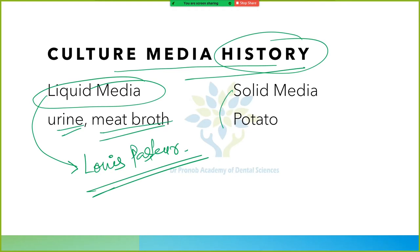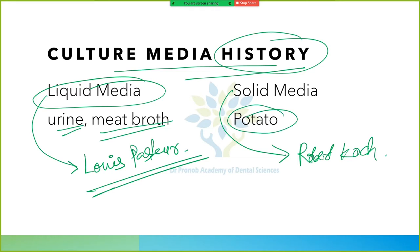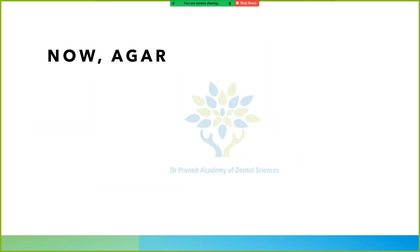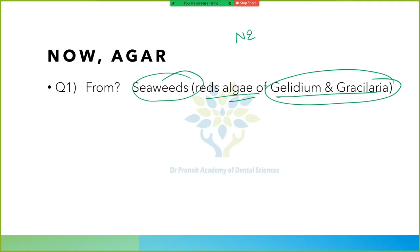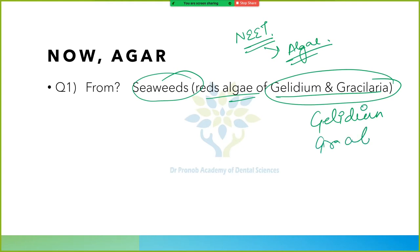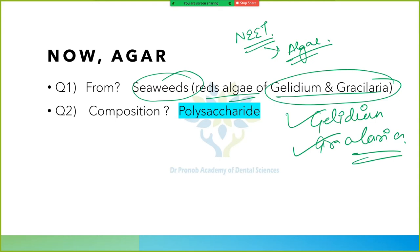Now we use agar. Agar is obtained from seaweeds — specifically red algae of Gelidium and Gracilaria. These names may be familiar from 11th and 12th grade biology. The composition of agar is polysaccharide, which is a carbohydrate. The nutritive value of agar is none — zero calories.